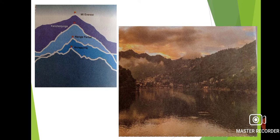The next topic is the Outer Himalayas, or the Shivalik range. The Outer Himalayan range is the lowest of the three. So from top to bottom: Greater Himalayas, then Middle Himalayas, then Outer Himalayas — that is Himadri, Himachal and Shivalik.